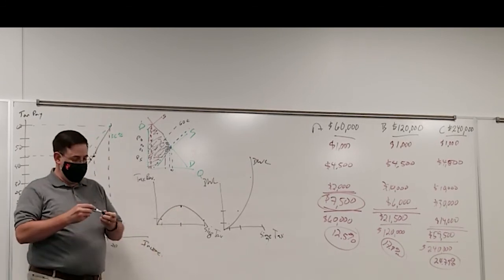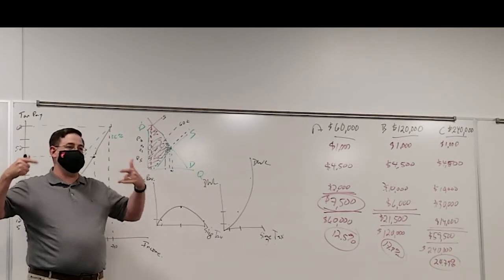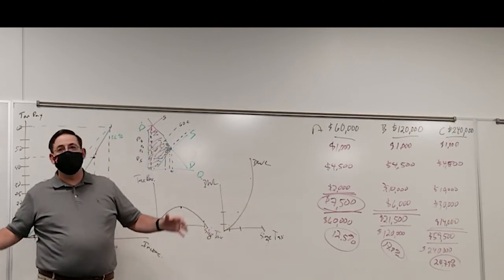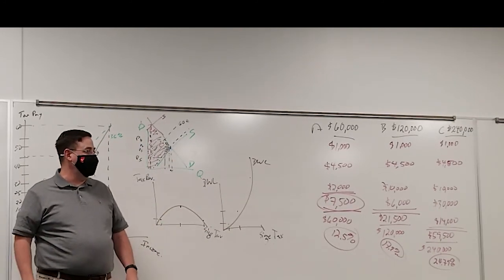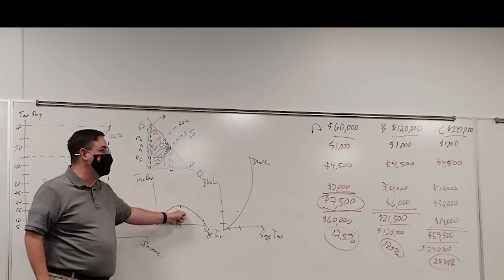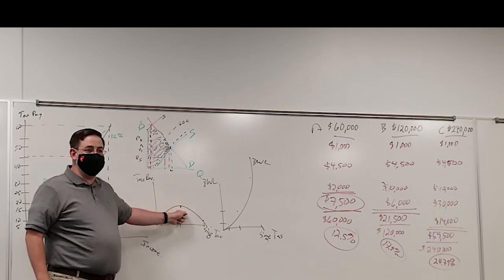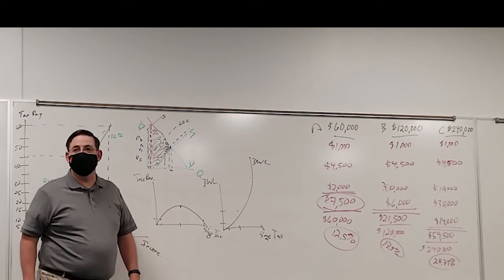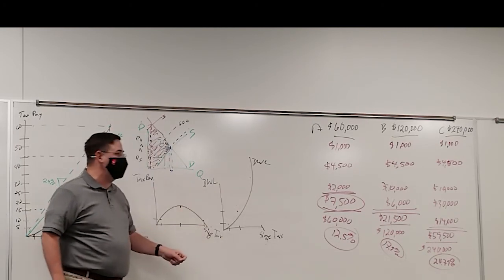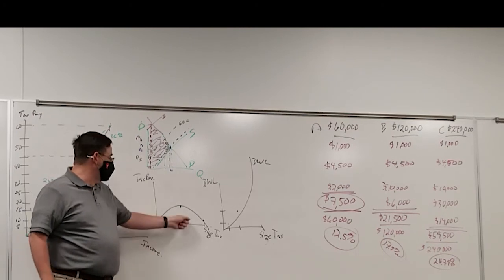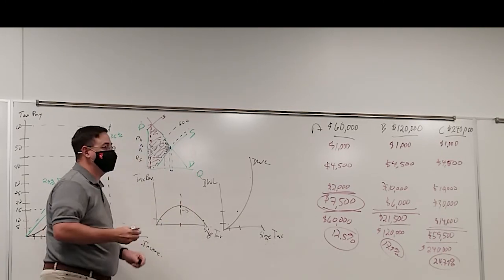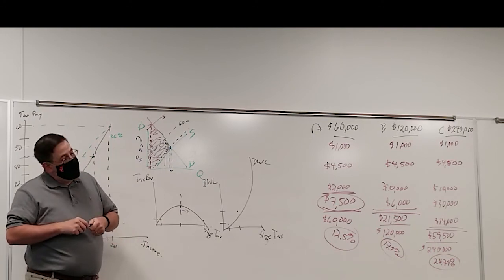Now, suppose we had a dictator in power. And the dictator wanted to maximize their tax revenue. They don't give a damn about you or any other people. Does that mean that the dictator would impose a tax so high that everybody was starving to death? Not if they're a rational dictator. If they're a rational dictator, they're going to charge the peak tax, the tax that gets them the most tax revenue. Because then they can spend it however they want to. Charging more of a tax as a dictator means that they have less money in their own pockets.